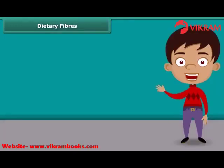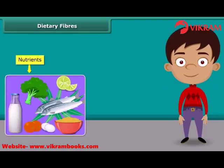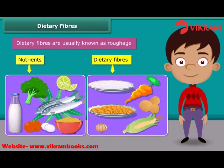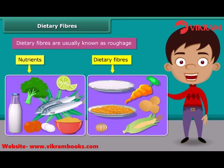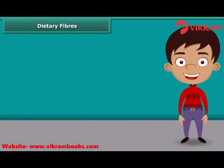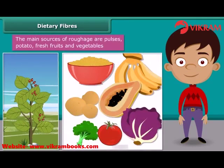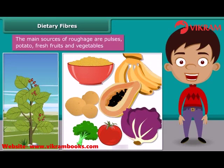Dear friends, besides nutrients, dietary fiber also plays an important role in our body. They are usually known as roughage. Roughage does not provide any nutrition to our body but adds bulk. They are found only in plants — pulses, potato, fresh fruits, and vegetables are the main sources of roughage. This helps our body to get rid of the undigested food.